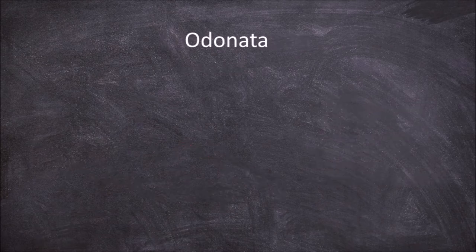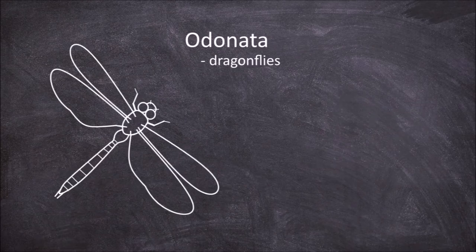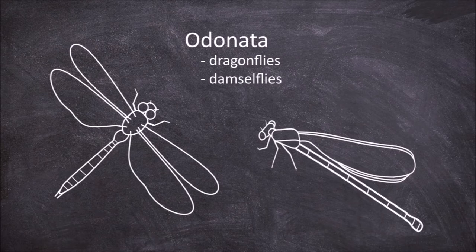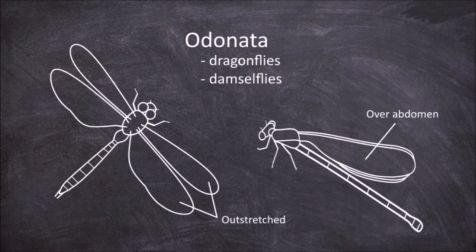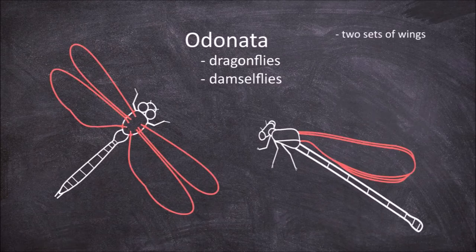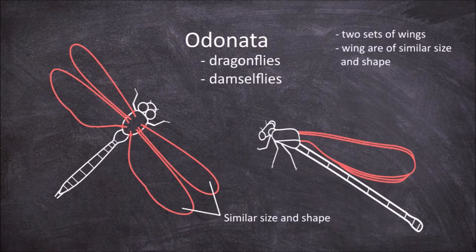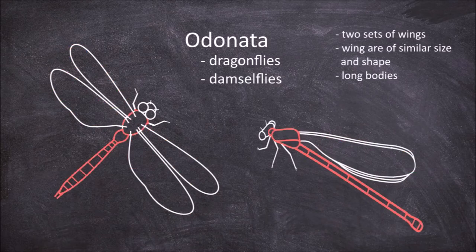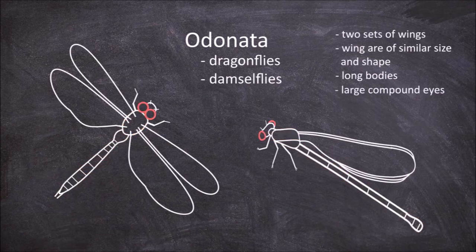The next order is the Odonata, which are the dragonflies and the damselflies. Members of the Odonata are also not able to fold their wings over their abdomen, and as such hold them outstretched or hold them over their backs. They vary from the mayflies in that they always have two sets of wings where both sets are of a similar size. They also have long slender bodies culminating in a large head housing very large compound eyes and short antennae.